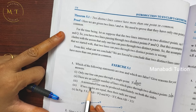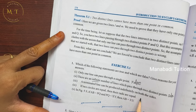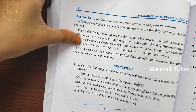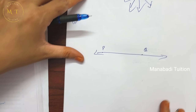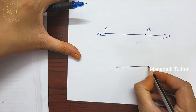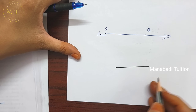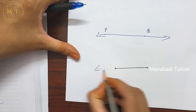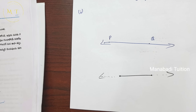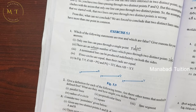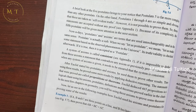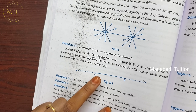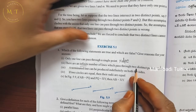Statement about terminated line: a terminated line can be produced infinitely on both sides. This statement is false.